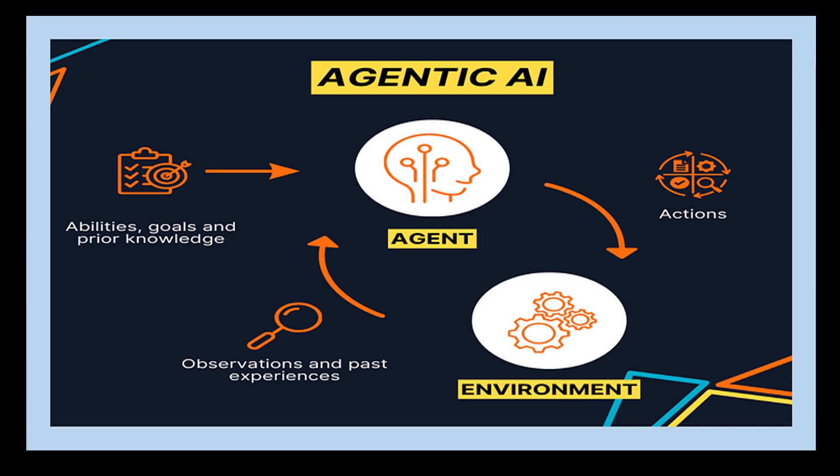Agentic AI refers to the type of artificial intelligence that empowers machines with the ability to take autonomous action and make decisions in dynamic environments without explicit instruction or guidance from humans. These agents are designed to learn and adapt over time, interacting with their surroundings to achieve specific goals or objectives.